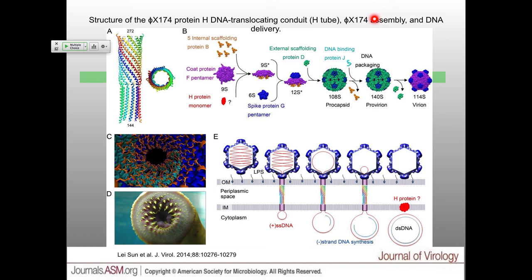Somehow this H protein has this crazy conformational change that can just push its way through both membranes of E. coli and allow it to get out. This is the cartoon form. Down at the bottom: interaction with LPS, then this crazy conformational change where the H proteins form this pore, and then the single-stranded DNA comes out. This is that high-resolution structure for that pore. The individual amino acids stick out in such a way that the DNA can only go in one direction — it can't go back inside the capsid. So it seems to just be pushed out, potentially by diffusion — a little bit comes out and it can't go back, so a little bit more comes out.